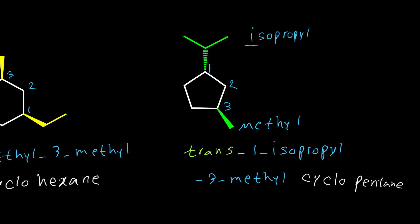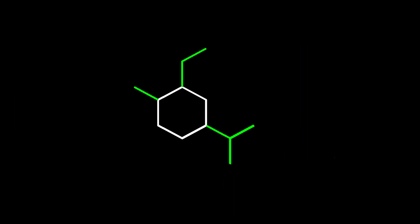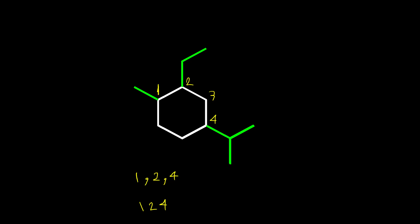In this example we have three points of attachment. I need to try putting number one on each carbon and evaluate which gives the lowest set of numbers. For the first option, starting here and going clockwise — it's closer to the second group — I assign number two here, number three, and number four. With this numbering the branches are on carbons one, two, and four: giving 1,2,4.